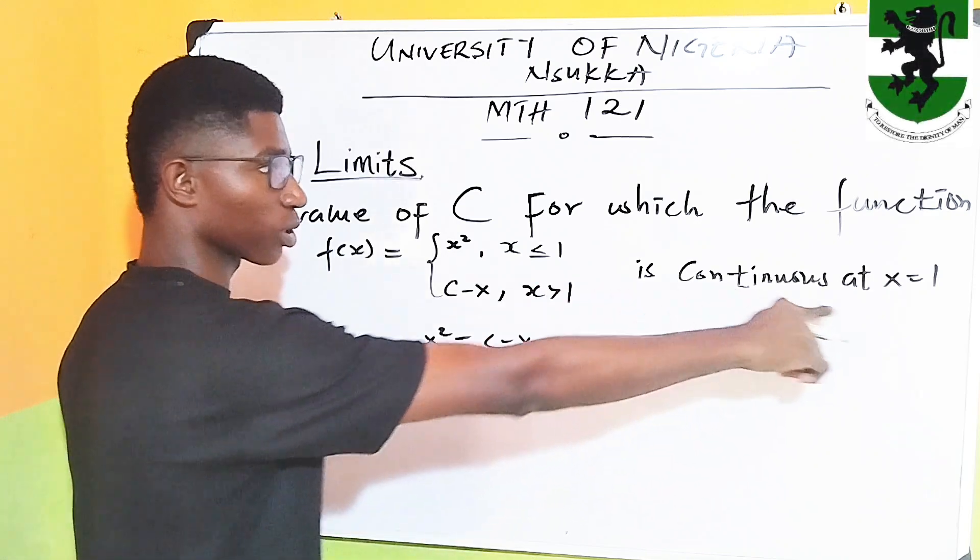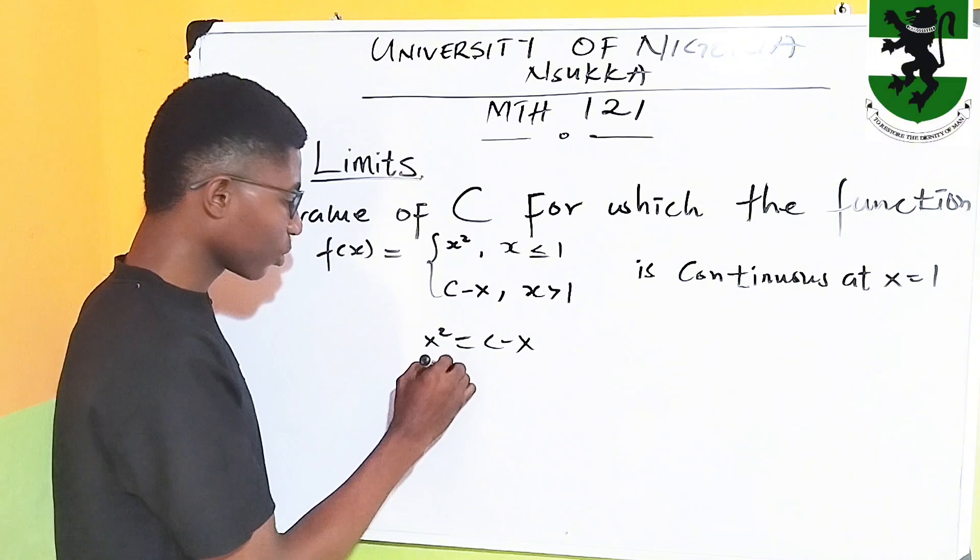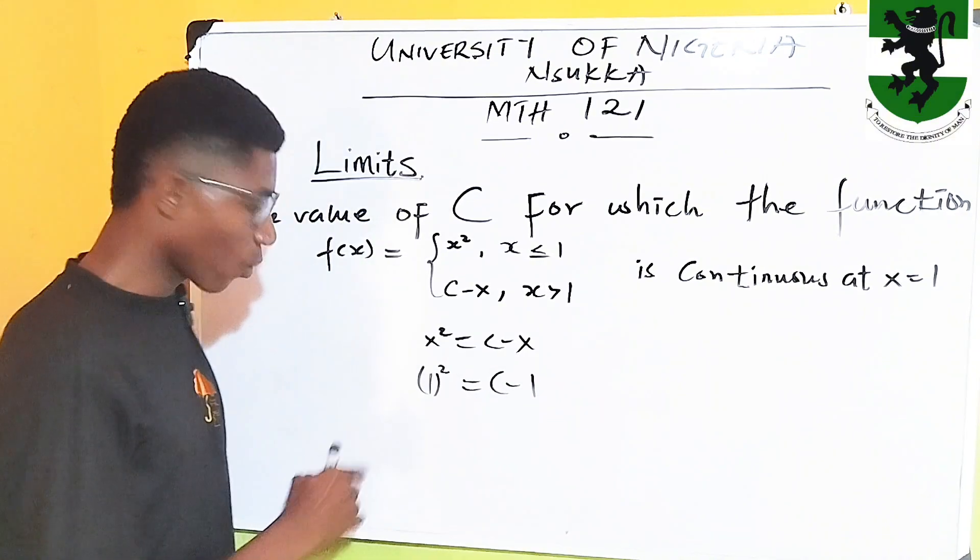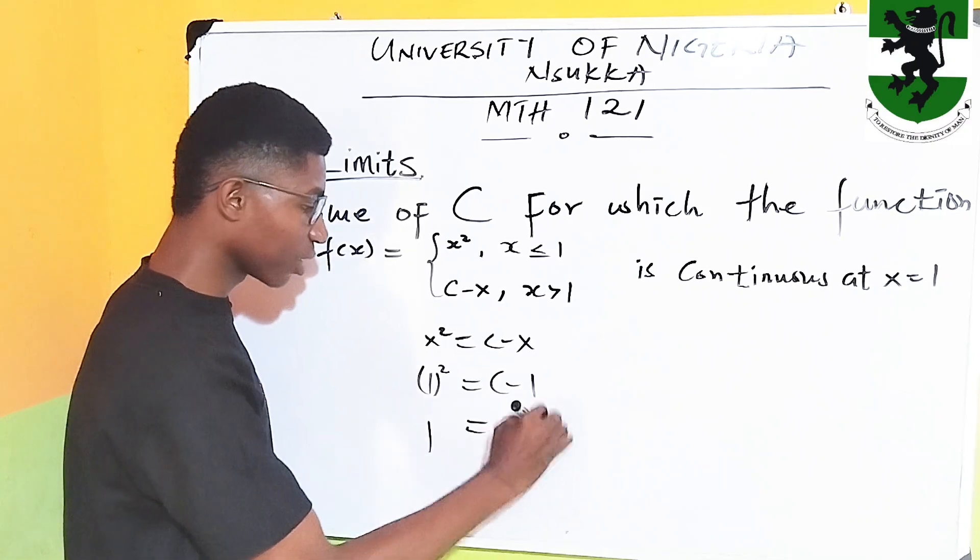The limit at the point is 1. So, I'm going to substitute 1 into this. You have 1 squared equal to c minus 1. 1 squared is 1, right? Equal to c minus 1.